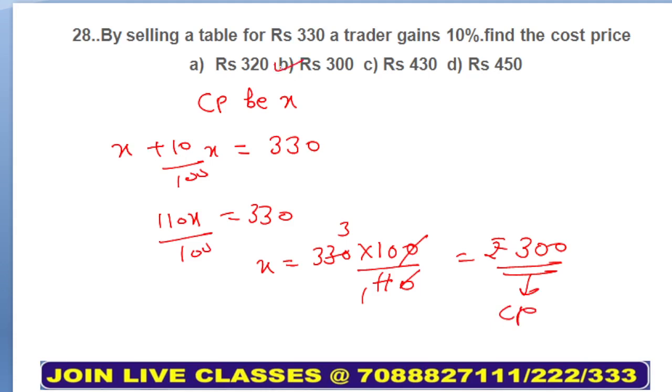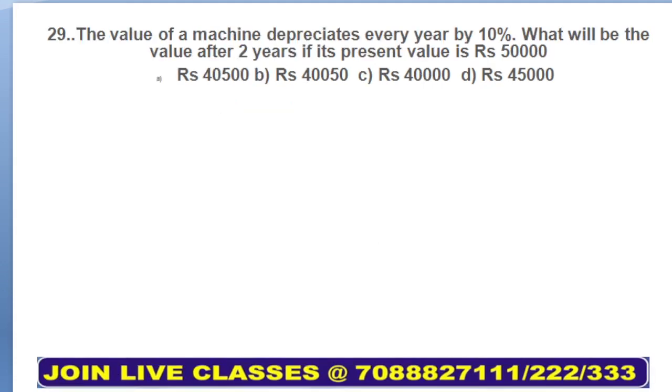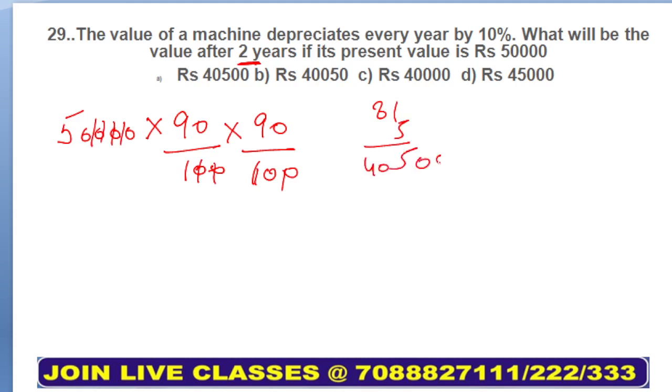Moving on to question number 29: the value of a machine depreciates every year by 10%. What will be the value after 2 years if its present value is 50,000? Present value 50,000, depreciate every year 10%, so next year 90 upon 100, next year again 90 upon 100. So your answer comes out to be 40,500, option A. That means your machine which was 50,000 will be worth 40,500 after 2 years.